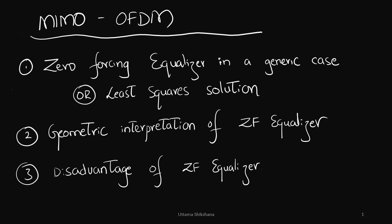Hello, dear friends, welcome back to the channel. This is a series related to MIMO OFDM, and this is the fourth part. In this part, I will be talking about the zero forcing equalizer in a generic case, the geometric interpretation of the zero forcing equalizer, and then the disadvantage of the zero forcing equalizer.